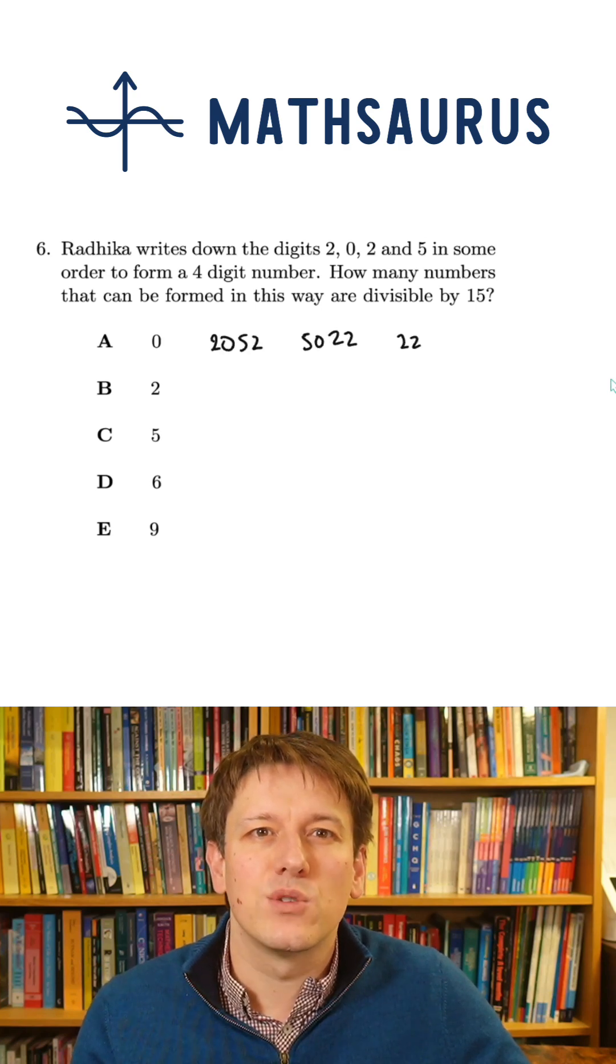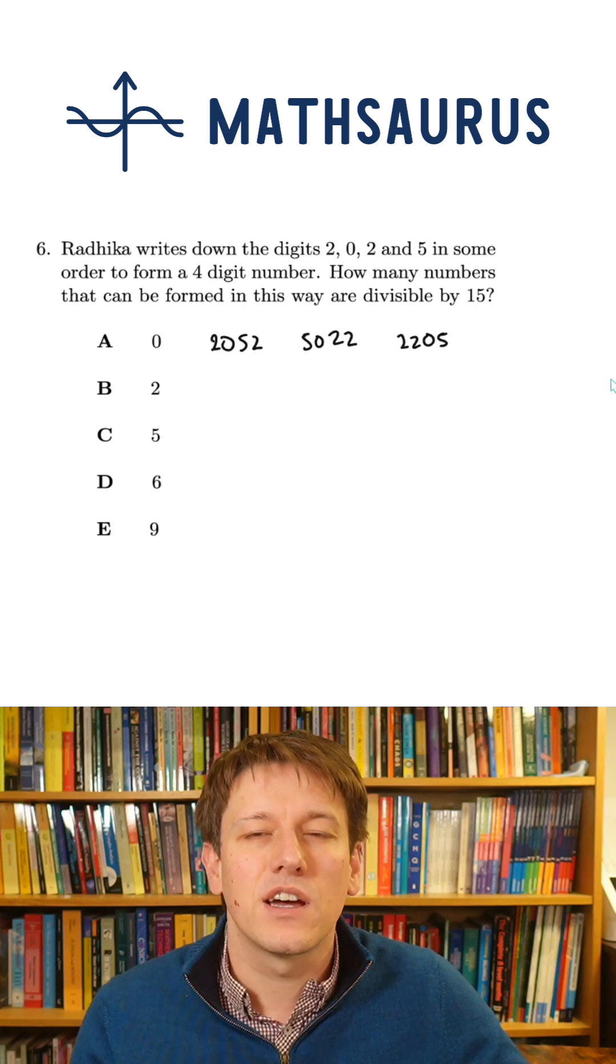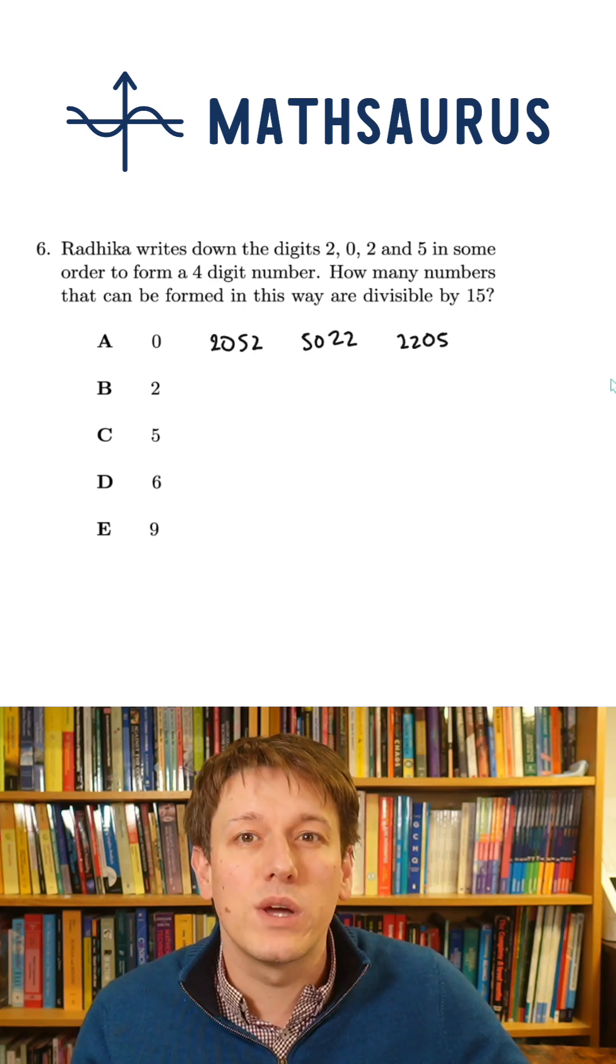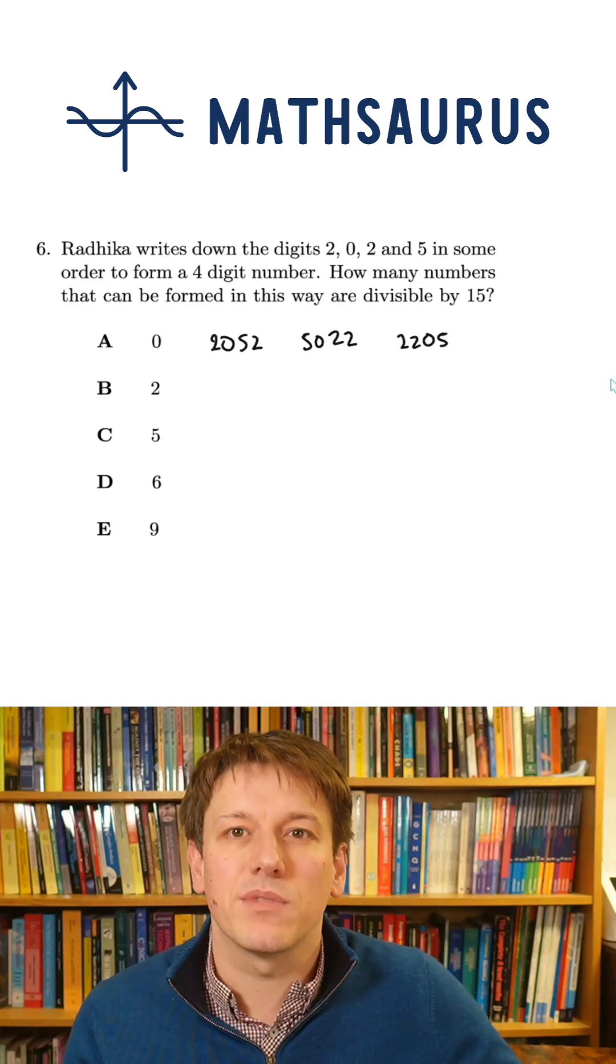Now, what sort of numbers are we looking at here then? Anything that's a permutation of 2025, obviously not including things that start with 0 because they wouldn't be four-digit numbers.